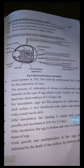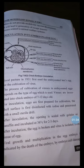Keep in mind, this is important for MCQs: Goodpasture in the year 1931 first used embryonated hen's eggs for the cultivation of viruses.